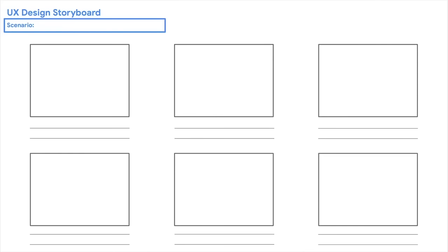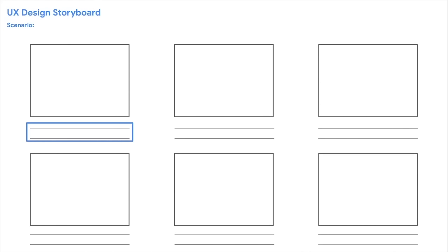Let's take a look at the template used to sketch a storyboard. The scenario is a short sentence that helps us understand the user and their problem. The visuals guide us through the user's experience with the app or service — this is where you'll actually sketch. The captions combine the visuals and scenario by describing how the user interacts with the product; they're especially useful for interactions that may be difficult to sketch out.